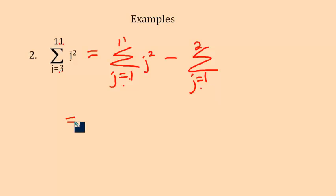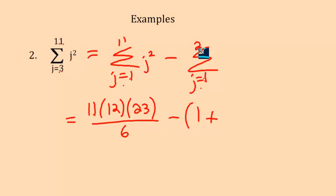But what this allows me to do is use the formula for this much. n times n plus 1 is 11 times 12. And then 2n plus 1, 2 times 11 is 22, plus 1 is 23. All over 6 for this term. Then take away the terms you don't want. If I plug, I'm just going to go ahead and plug and chug this. I don't really need a formula to plug in two terms. If I plug in 1, I get 1 squared, which is 1. And if I plug in 2, I get 2 squared, which is 4. Keep in mind, you want to add these together before you do your subtraction. That's why I put the parentheses there.